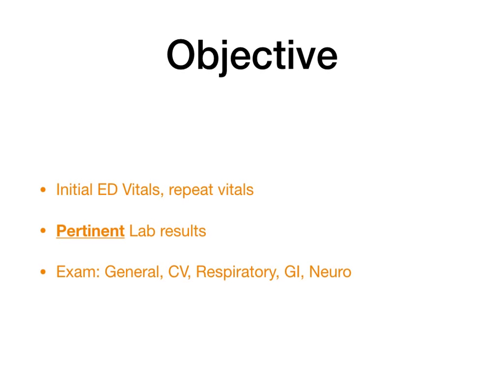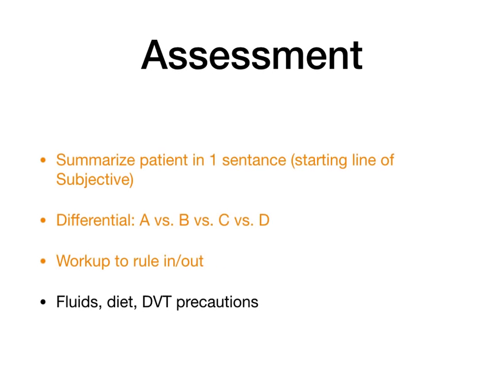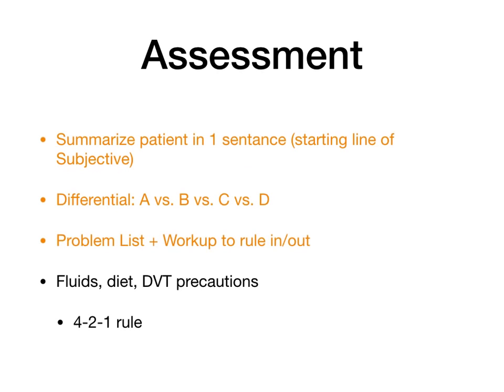After you do the objective, we're on the assessment and plan — it's really two things mushed together. The first thing you do in your assessment is you always summarize the patient in one sentence, kind of repeating the opening line of your subjective. Then you're going to give your differential embedded within a problem list. You'll form a problem list, go through your differential, and talk about every single problem the patient has and what we're going to do for it — the workup to rule things in or out, how we're going to treat lab abnormalities, et cetera.